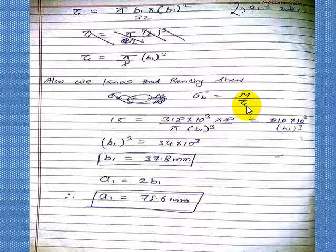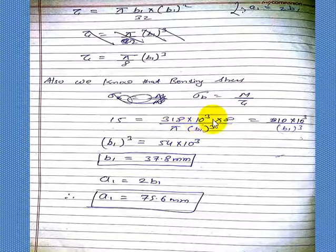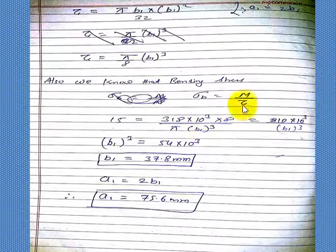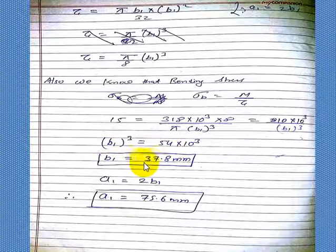Also we know that the bending stress sigma b is equal to M upon Z. We have given 15, and the M has come to 318 into 10 to the power 3, and Z has come to pi by 8, b1 cube. From this equation we have to calculate b1.